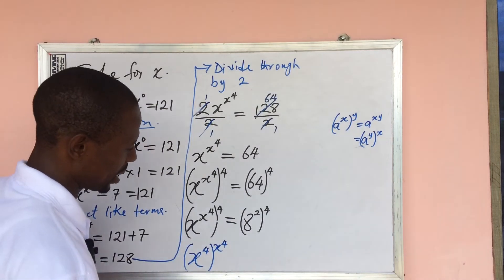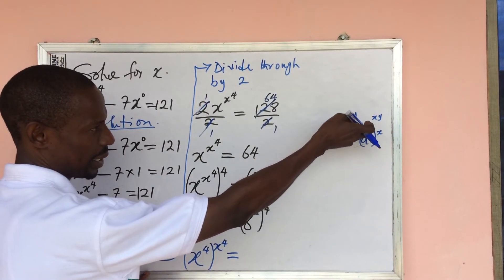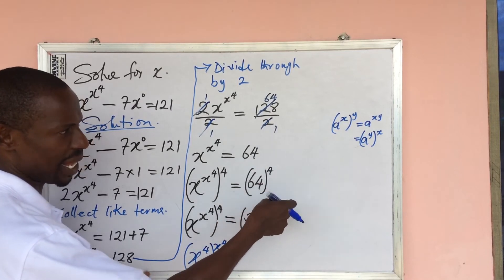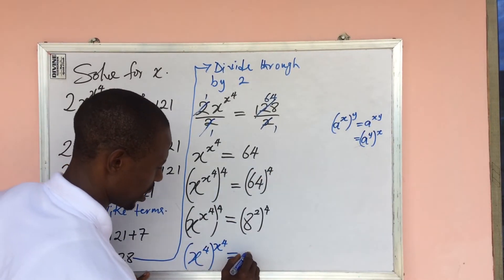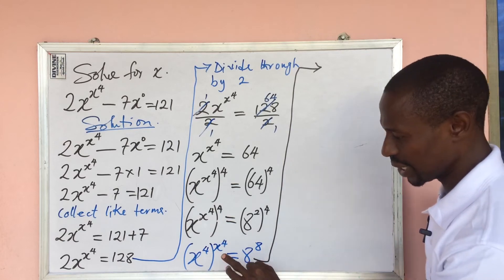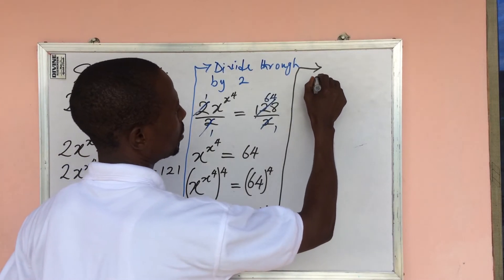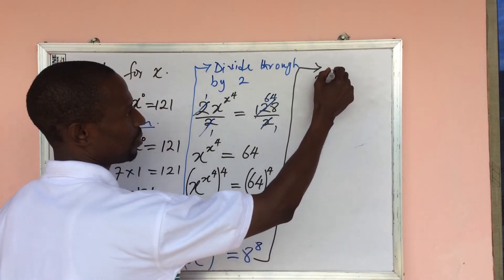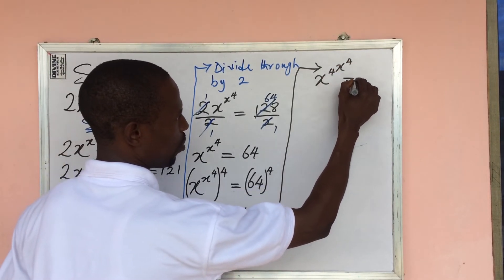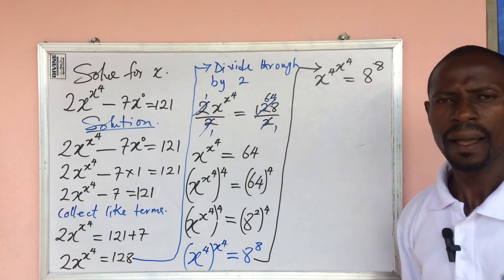Now we also apply the law again: when you have a number raised to a power and further raised to another power, multiply the two powers. So multiplying gives us 8 to the power of 8. From here, this man becomes x to the power of x to the power of 4, all to the power of x to the power of 4, equal to 8 to the power of 8.